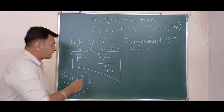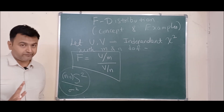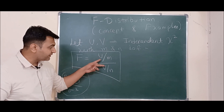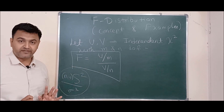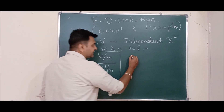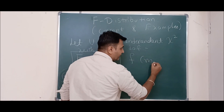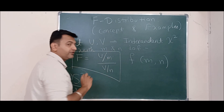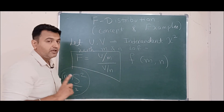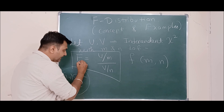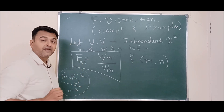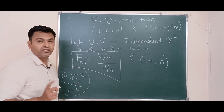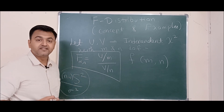F depends on two degrees of freedom — unlike chi-square which has one. Some people write it as F(M, N), where M is the numerator degree of freedom and N is the denominator degree of freedom. These are the notations you may see.